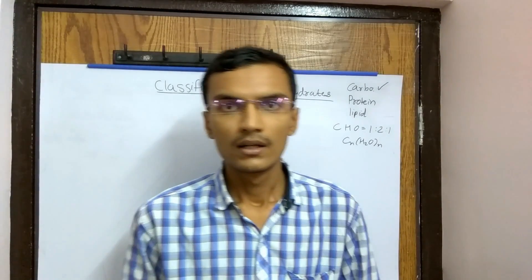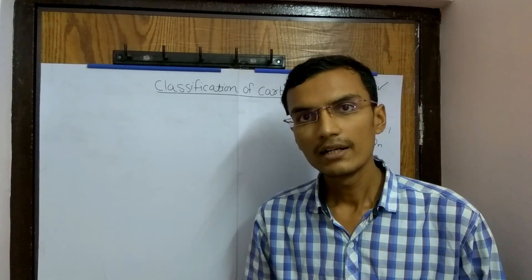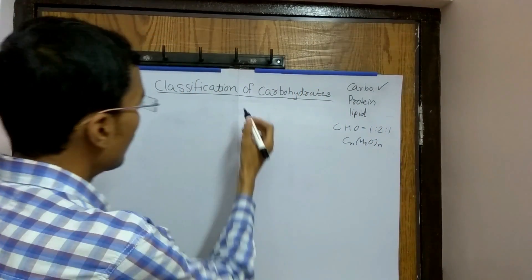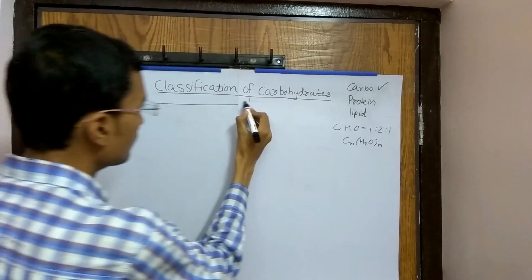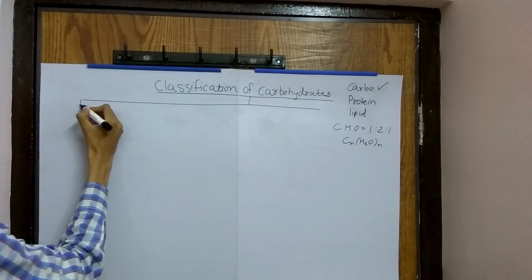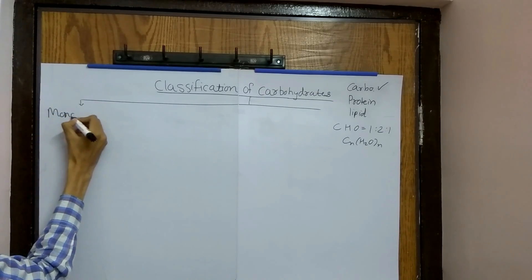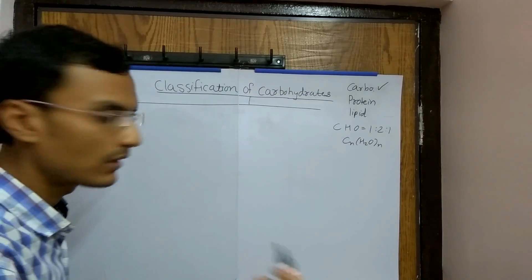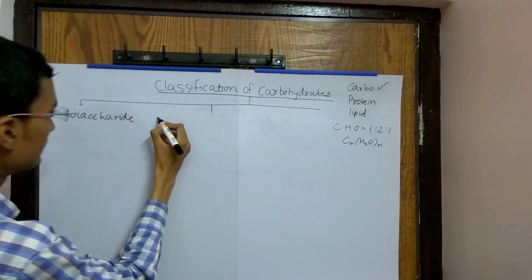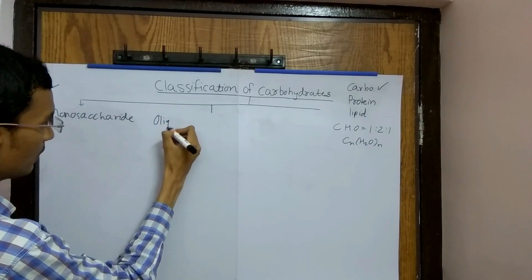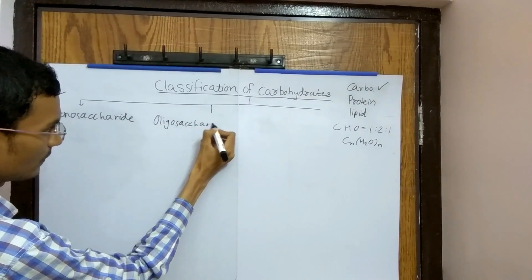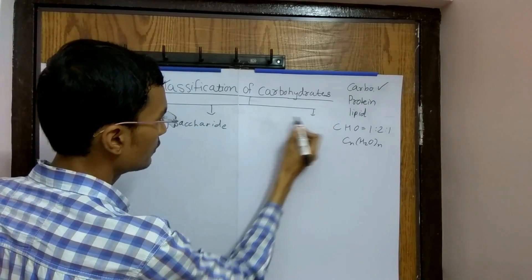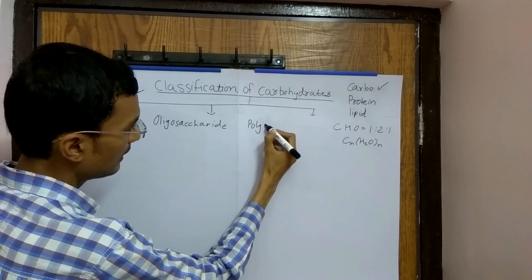Carbohydrates are mainly classified into three types. First is monosaccharide, second is oligosaccharide, and third is polysaccharide.